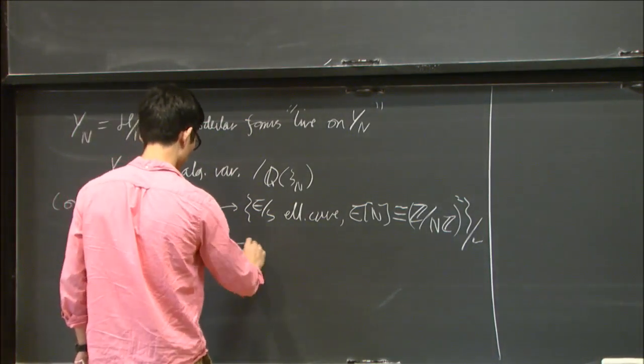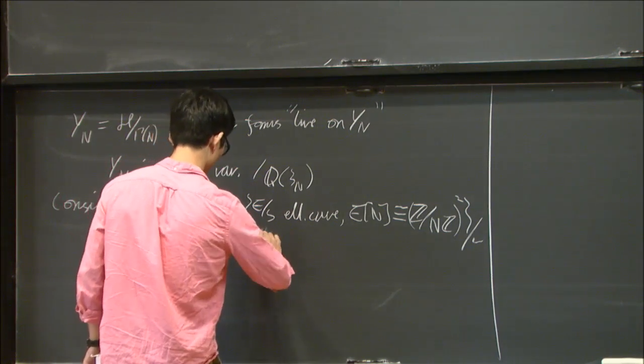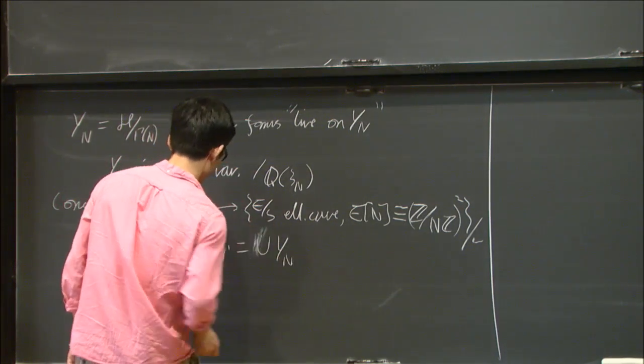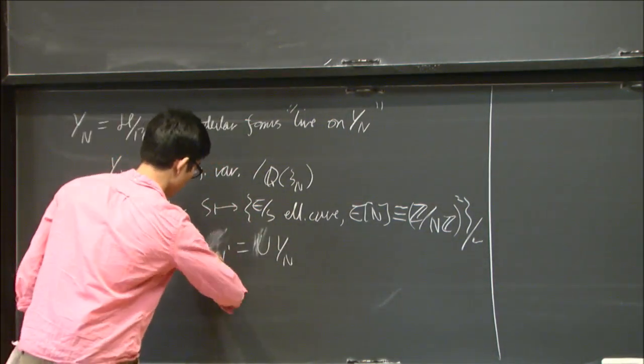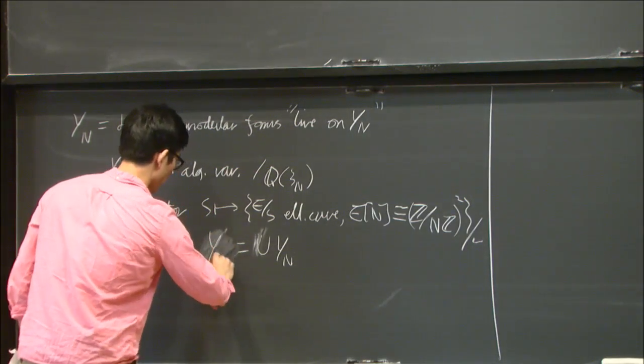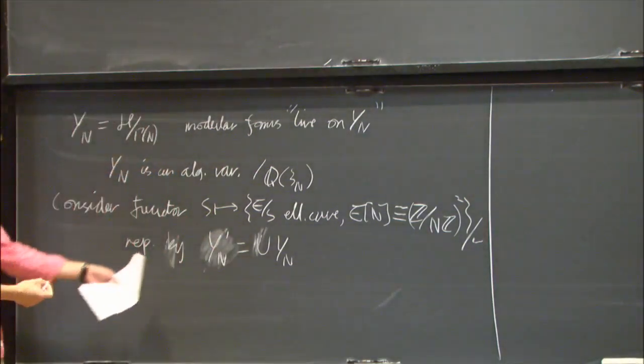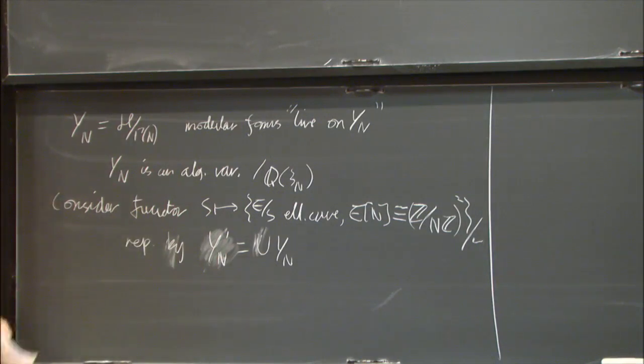then it turns out that this functor is represented by a certain union of these yn's that I consider, so I'll call them yn prime. This yn prime is really what's going to be like the Shimura variety.